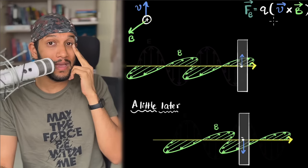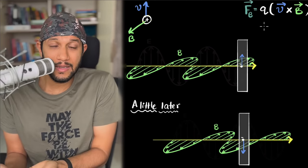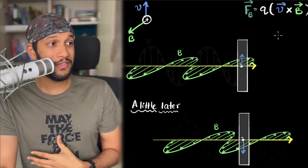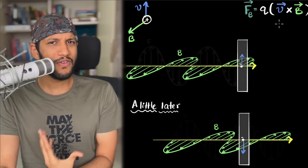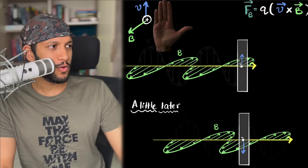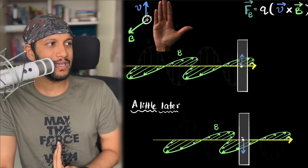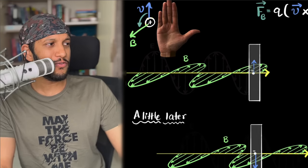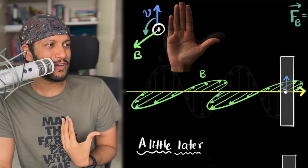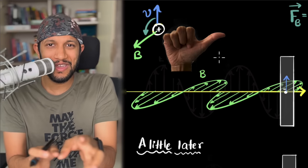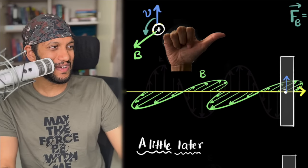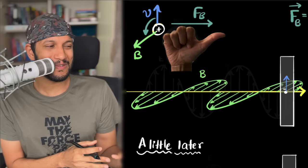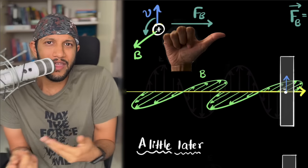Just like electric fields put a force qE on a charge, magnetic fields put a force qv × B. What's important right now is the direction, given by v × B. To find it, use your right hand: point your four fingers in the direction of velocity, then curl them toward B. For a charge moving upward with B coming out of the screen, the thumb points to the right — so the magnetic force is to the right. If it's a negative charge, the force is in the opposite direction.